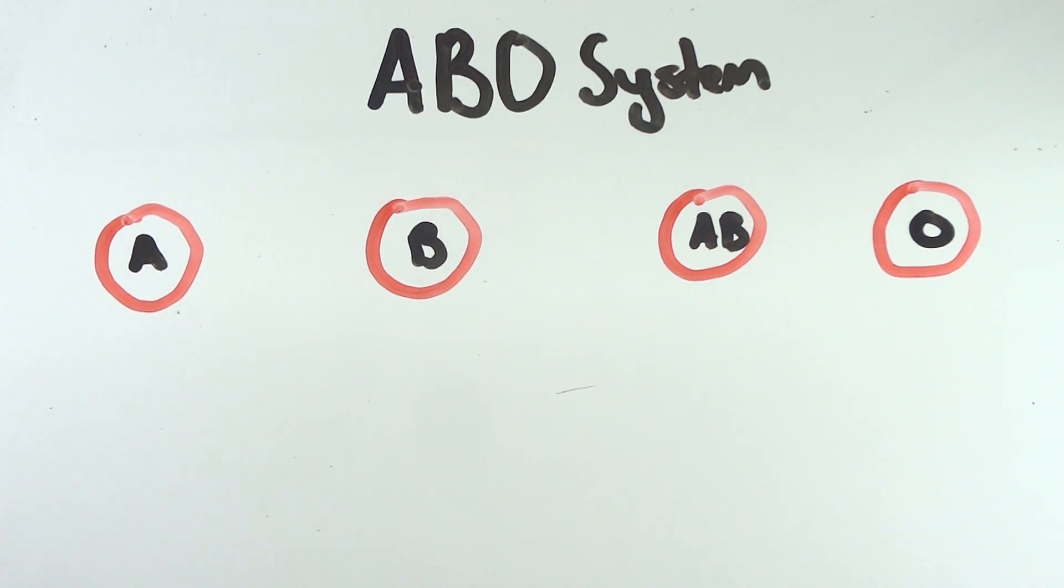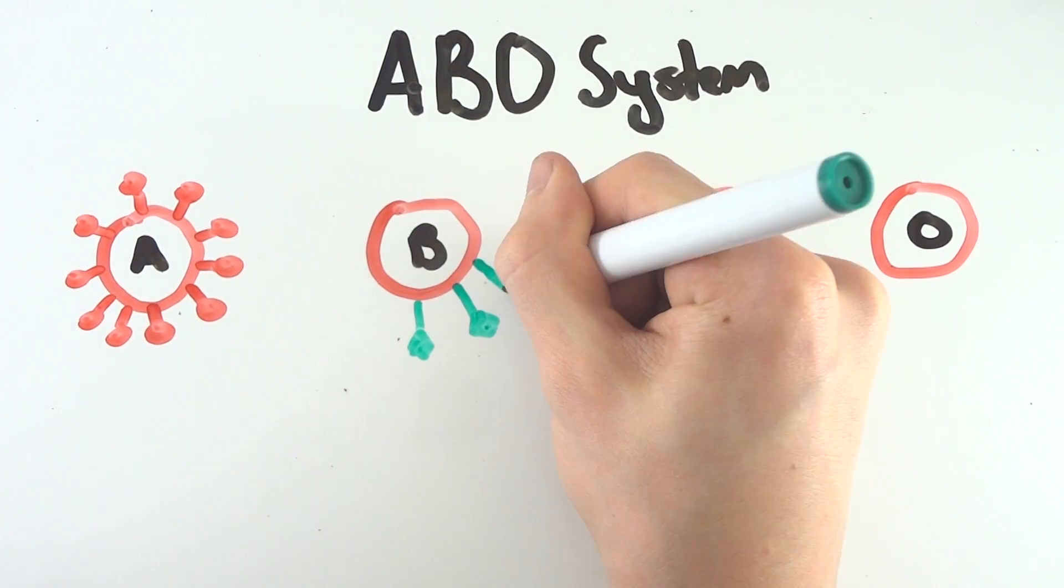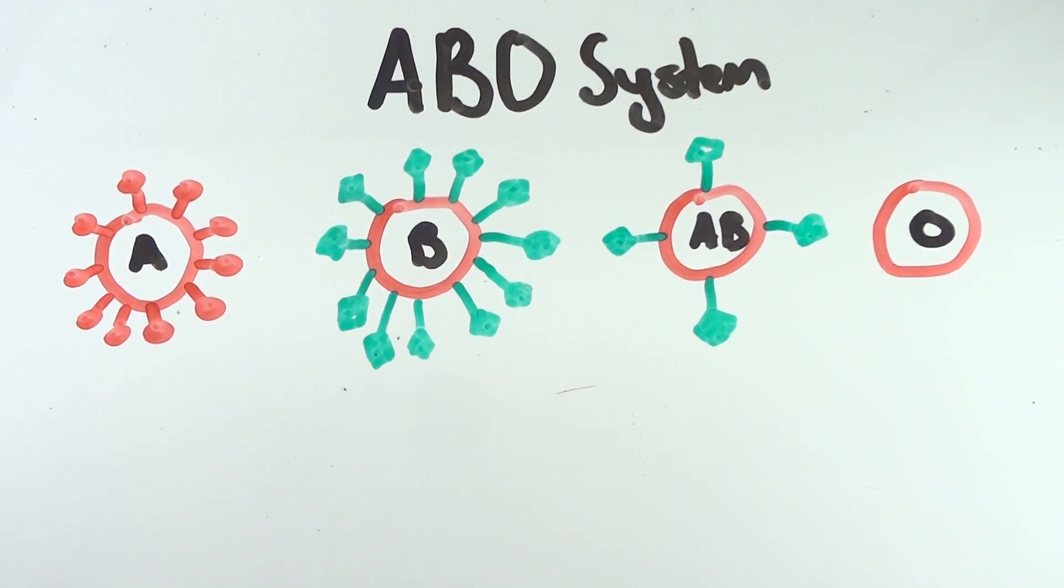Those in group A have A antigens on their red blood cells and anti-B antibodies in their plasma. Those in group B have B antigens on their red blood cells and anti-A antibodies in their plasma.